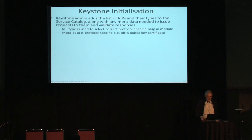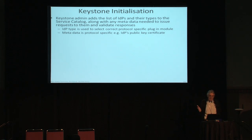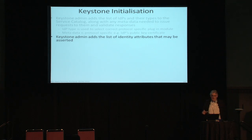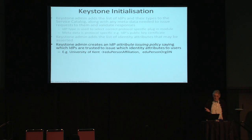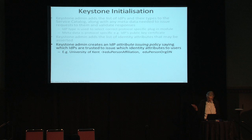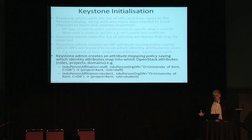To initialize Keystone for federation: the Keystone admin first adds trusted IDPs to the service catalogue, specifying type, protocol, and protocol-specific metadata. That sets up the trust relationship. He then adds the list of identity attributes that may be asserted by each IDP, creating an attribute issuing policy. He inserts the attributes first, then creates the policy from those attributes. For example, the University of Kent may be trusted to assert eduperson affiliation and eduperson organisation distinguished name. He then creates the attribute mapping policy — which values from which IDP map to which OpenStack attributes.